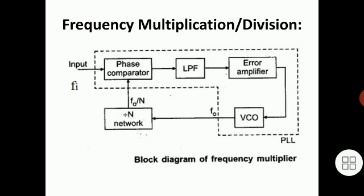A divide-by-N network or frequency divider is inserted between the VCO and the phase detector. When the PLL is in locked condition, the output of the frequency divider network equals the input frequency Fi. So the VCO provides a multiple of the input frequency. The desired multiplication factor is achieved by inserting a suitable divide-by-N network, where N is an integer. Thus in locked condition, F0 = N × Fi.